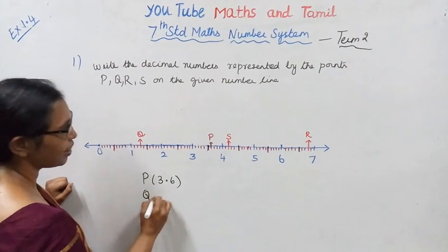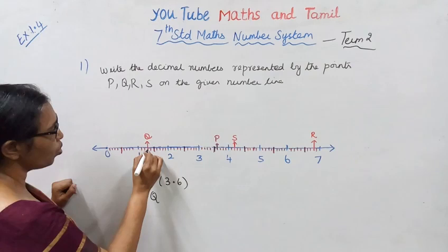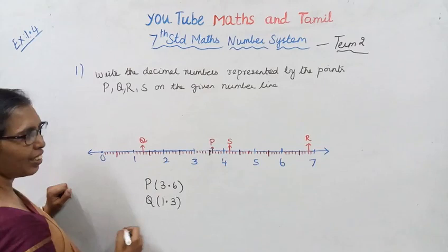Point Q: one, two, three, four, five. Q is at 1.5.